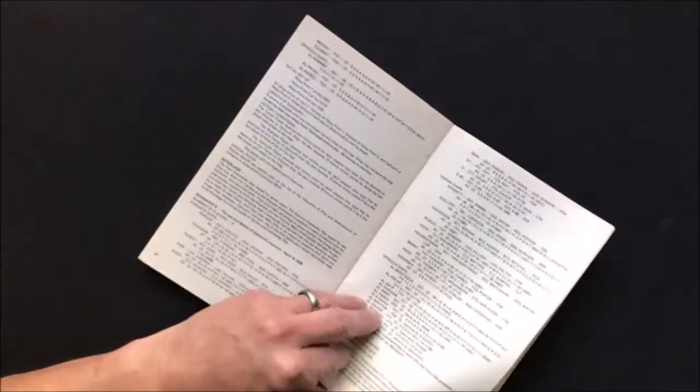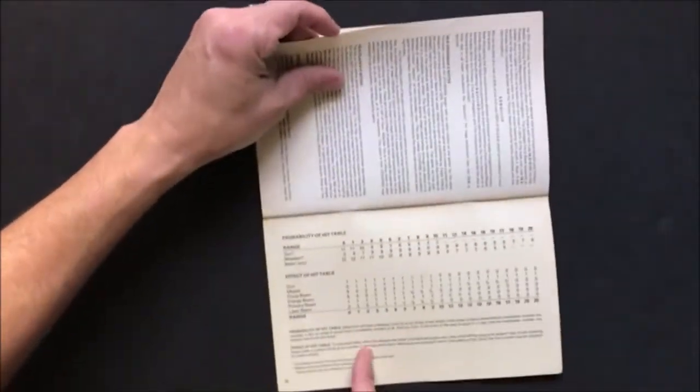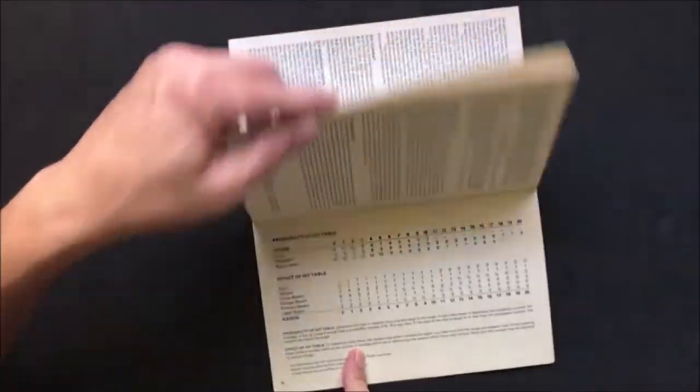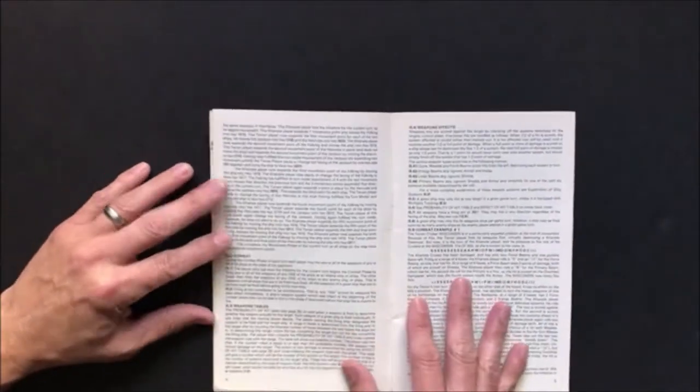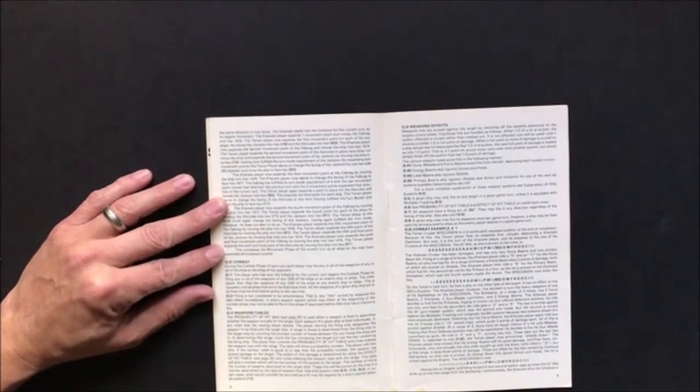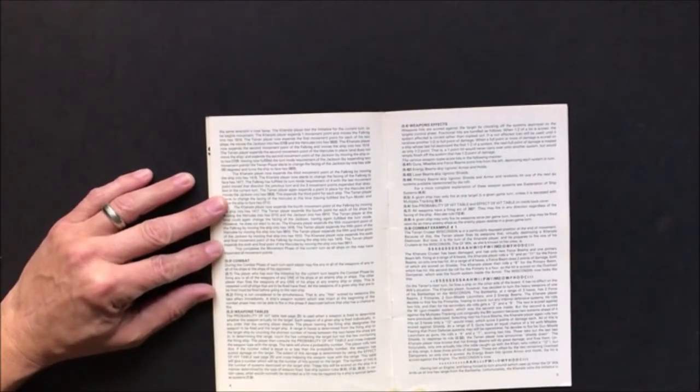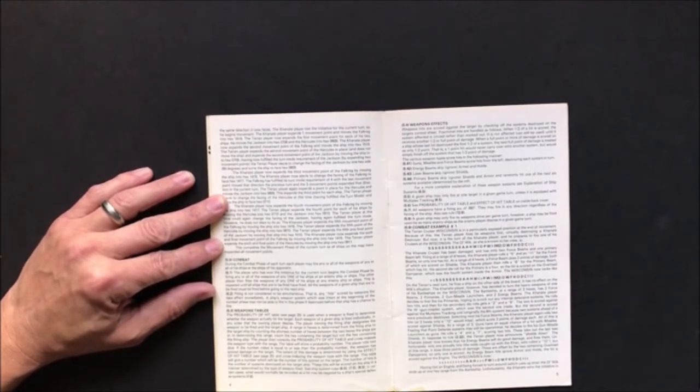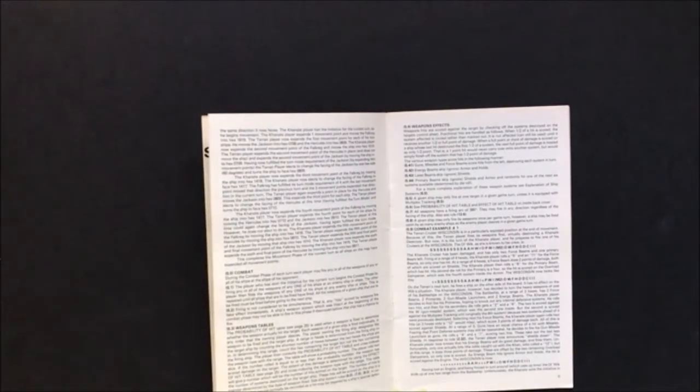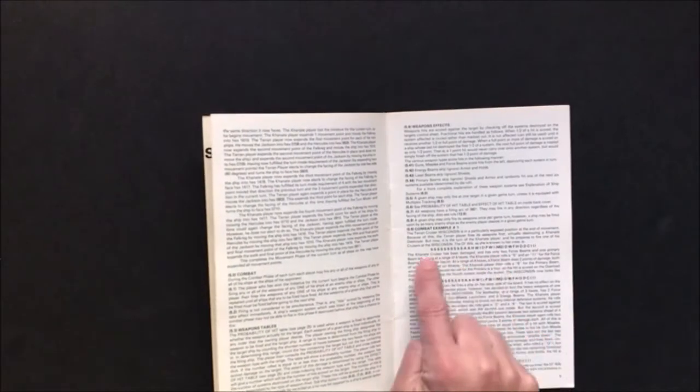You got your probability of hit tables: guns, missiles, beams. It's pretty easy - each type of weapon scores hits from the left destroying each system in turn. Energy beams skip armor and holds.